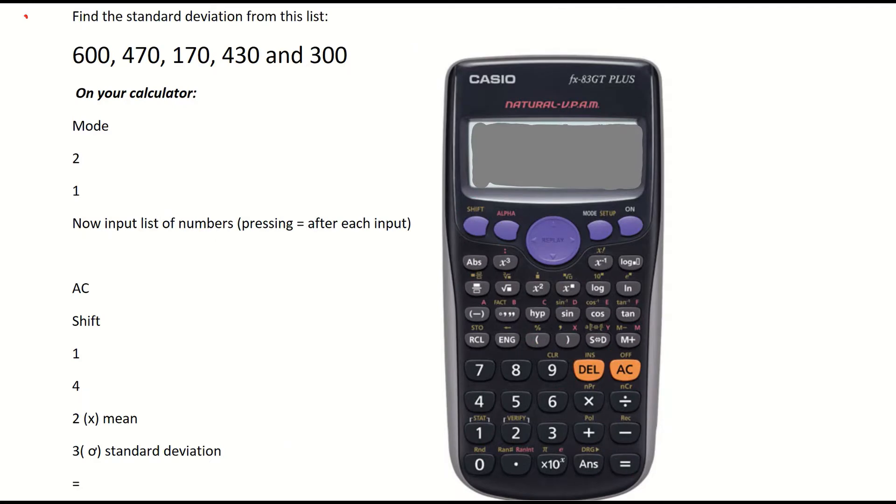So here's our example. Find the standard deviation from this list of 5 numbers: 600, 470, 170, 430 and 300. Now if you want to see how to find the mean from a list of numbers by using our formula on page 33 of our log tables, check the other video.